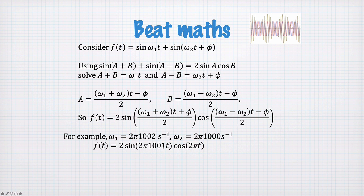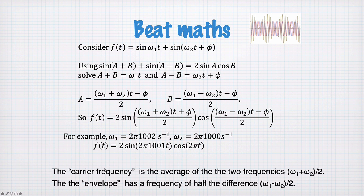Now these two frequencies have some names. The carrier frequency is the average of the two frequencies. So this is our carrier frequency here. And the envelope frequency has half the difference of the frequencies. So this is the envelope frequency here. Envelope frequency is sometimes also known as the modulation frequency.